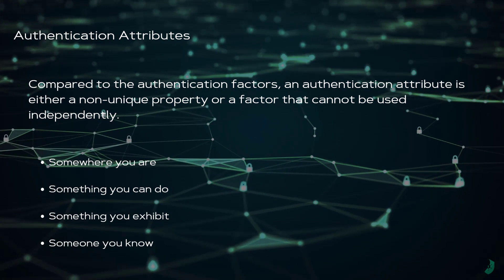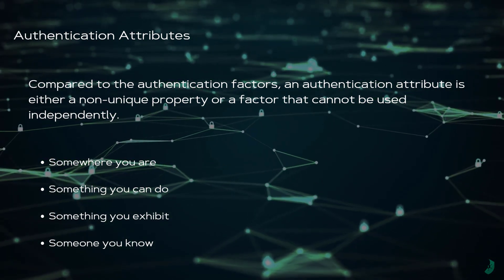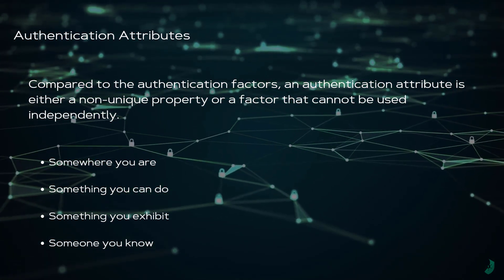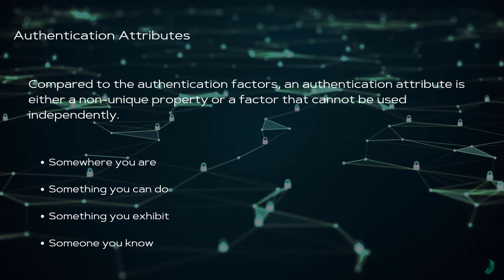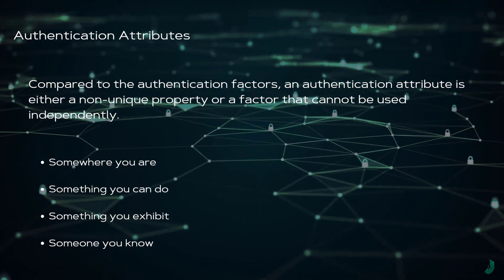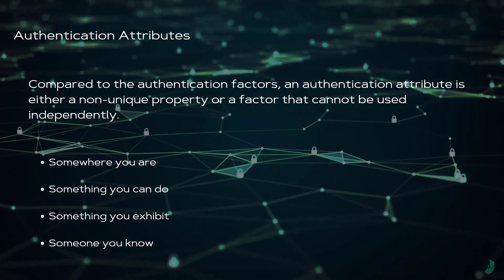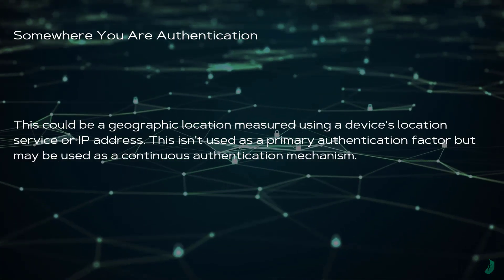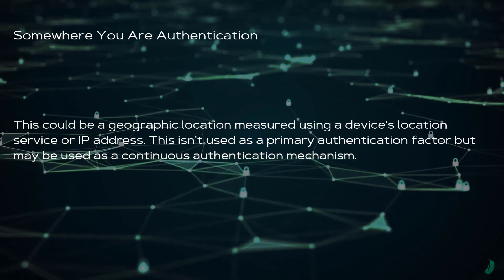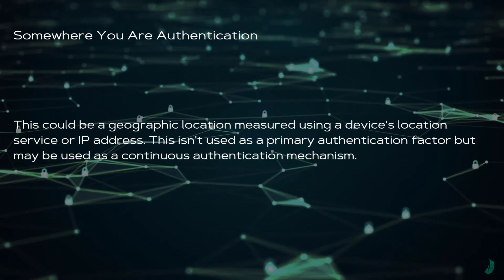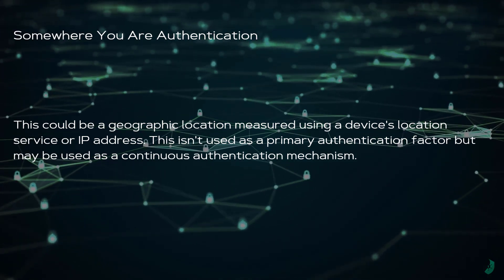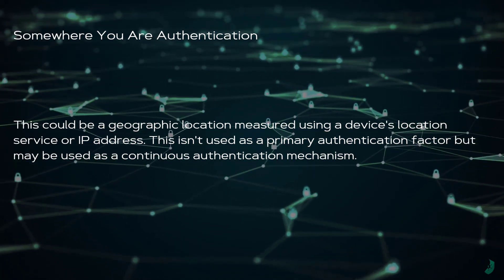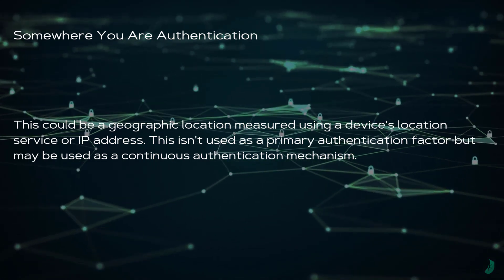You also have authentication attributes. When you compare authentication attributes to authentication factors, an authentication attribute is either a non-unique property or a factor that cannot be used independently. Examples would be somewhere that you are, something that you can do, something you exhibit, or someone that you know. 'Somewhere you are' authentication refers to things like geographic location measured using your device's location service or IP address. This isn't typically used as a primary authentication factor, but it may be used as a continuous authentication mechanism.